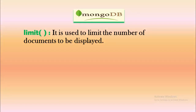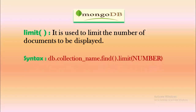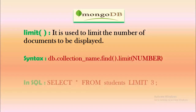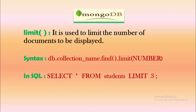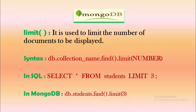Now let's see the limit function. The limit method is used to limit the number of documents to be displayed. The syntax is db.collectionName.find().limit(number), where the method accepts the number of documents to show. In SQL, the equivalent is SELECT * FROM students LIMIT 3, returning only 3 rows. In MongoDB, this is db.students.find().limit(3), meaning 3 documents will be shown at a time.